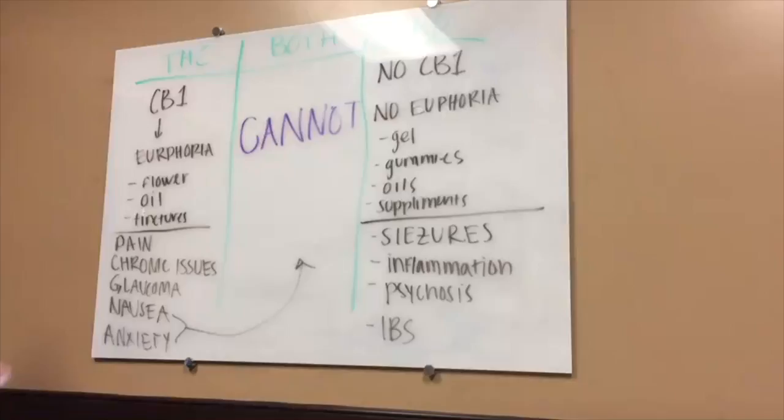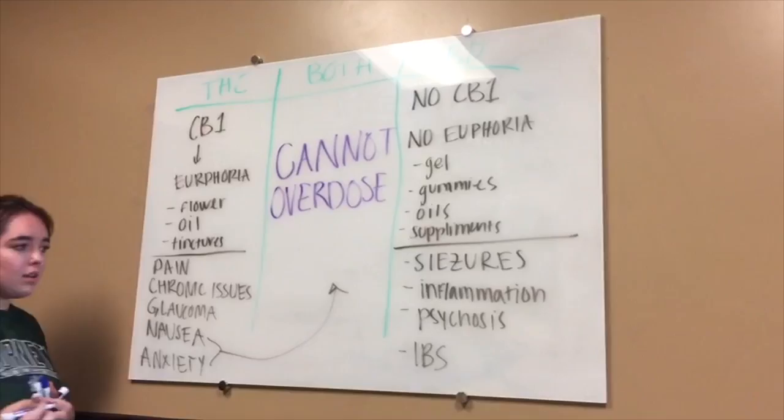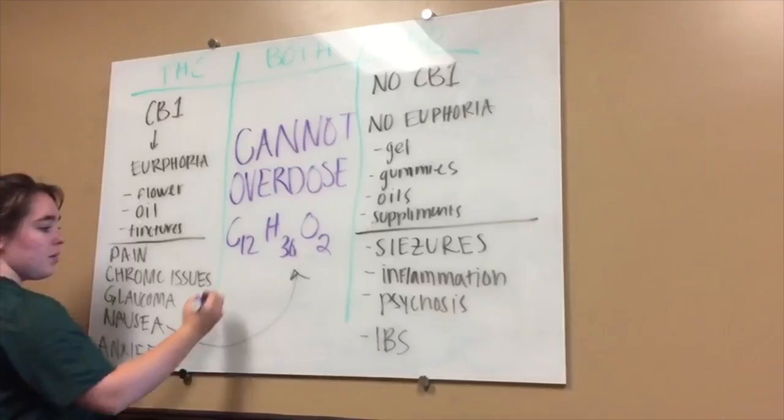THC and CBD are two different types of the marijuana plant, but they have the same chemical structure: C21H30O2. Both provide many of the same medical benefits.